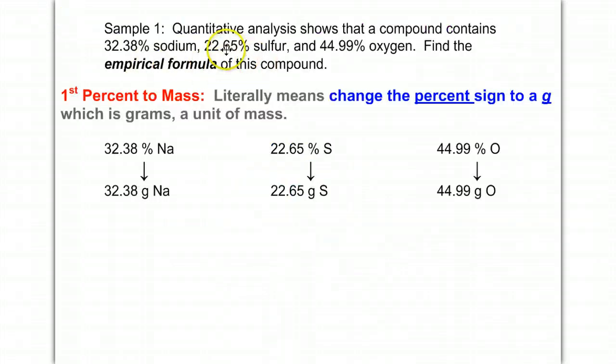In the problem, we are given 32.38% sodium, 22.65% sulfur, and 44.99% oxygen. The first step is percent to mass. This literally means change the percent sign to a g, which is grams, a unit of mass. So here I just change the percent sign to a g, and now I have grams of each, or the mass.